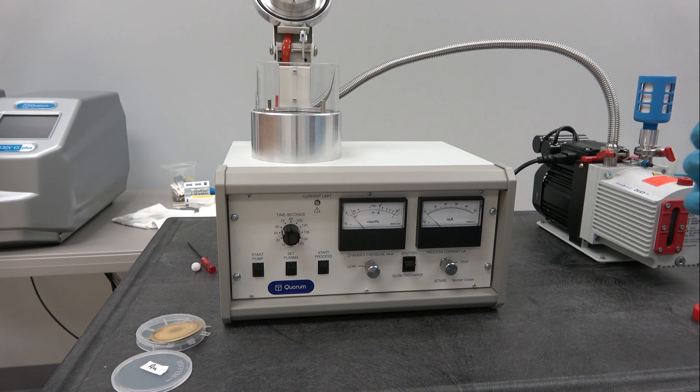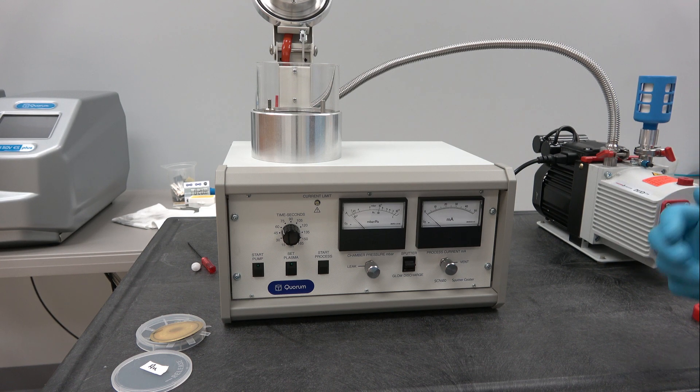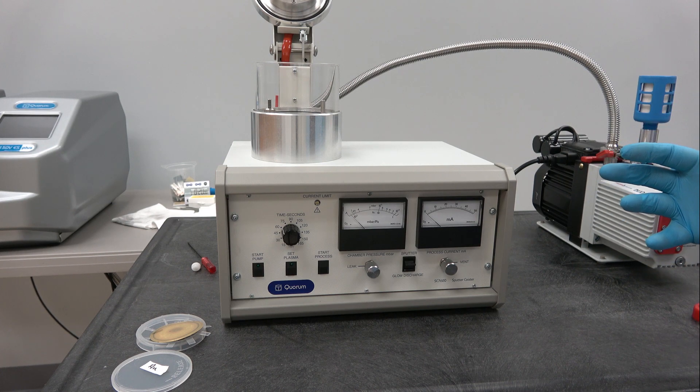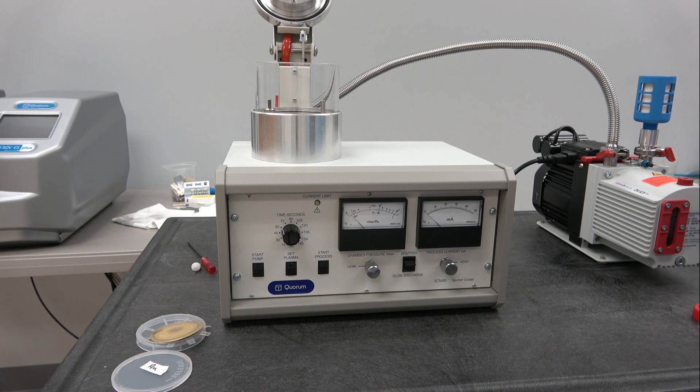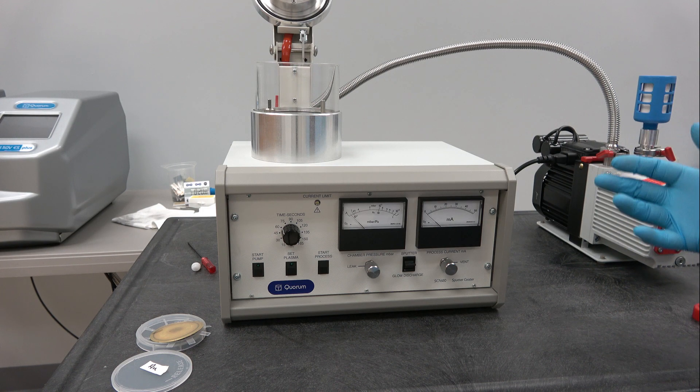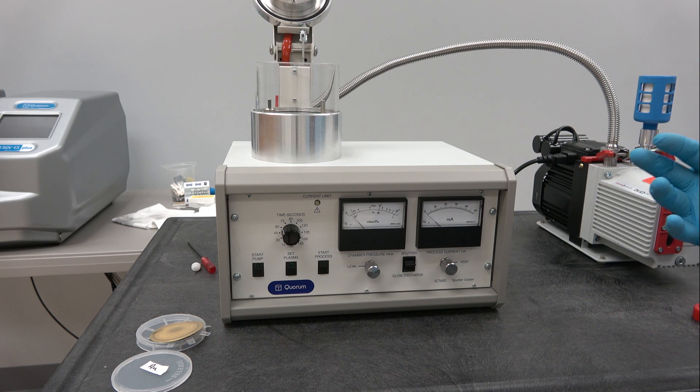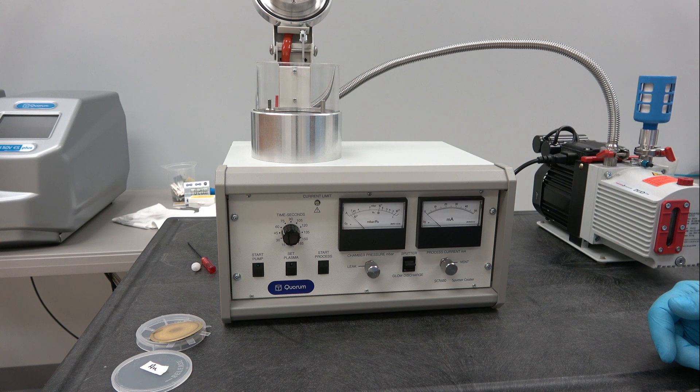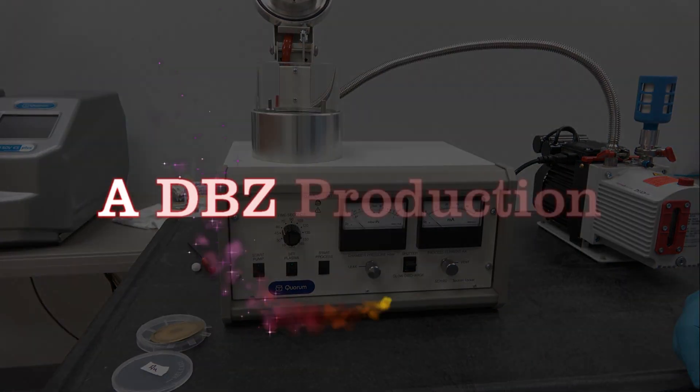And go observe them in the SEM. So this is the 7620 sputter coater, mini sputter coater. These are the basic operation and setup principles involved with this instrument. If you have any questions, feel free to contact me at Electron Microscopy Sciences and I can answer those questions for you. Thanks very much for your attention.